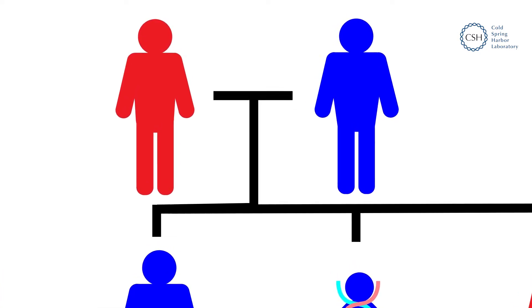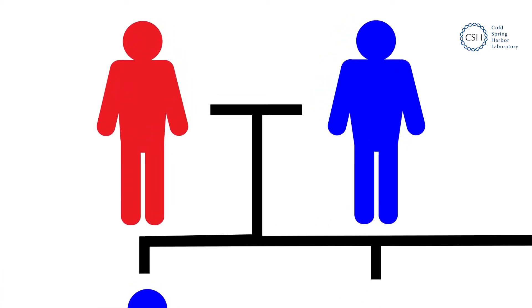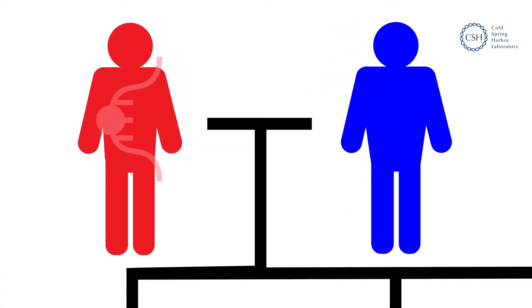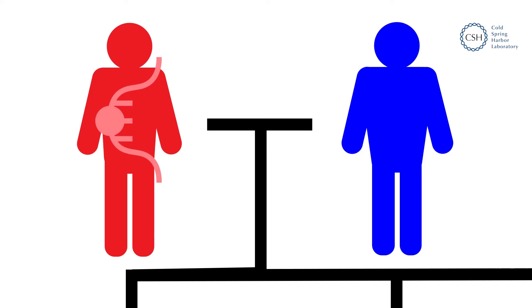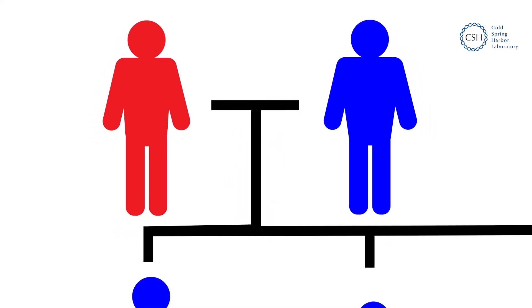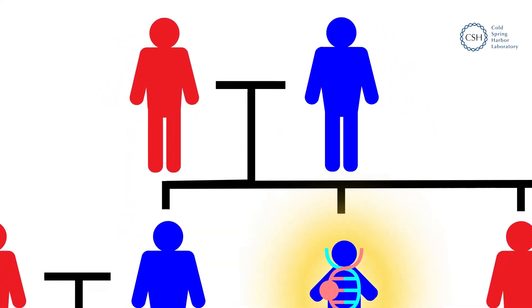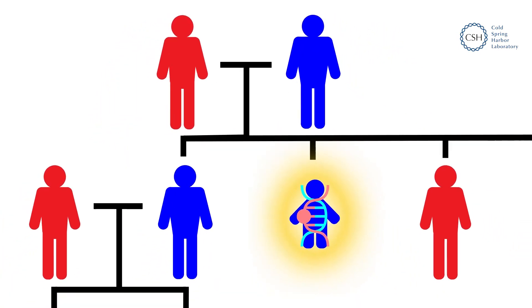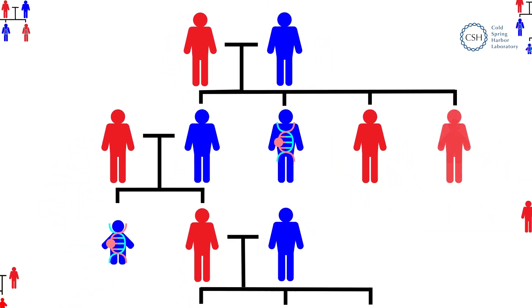Children can inherit genetic variants that substantially increase their chances of being born with ASD. These variants are usually passed down from mother to son. Boys born to high-risk families have about a 1 in 2 chance of having ASD, and girls born to high-risk families have about a 1 in 8 chance.